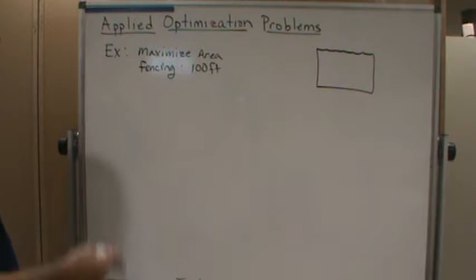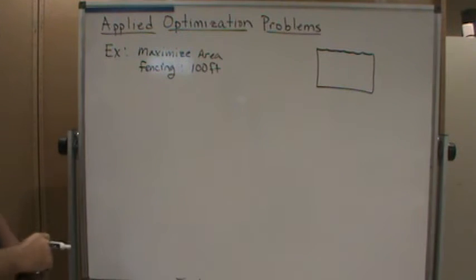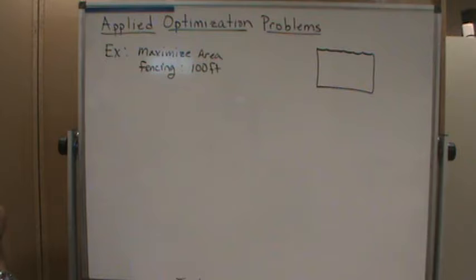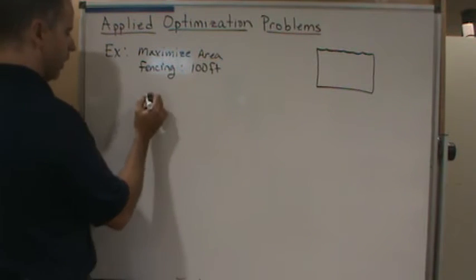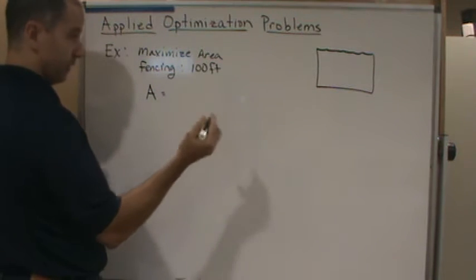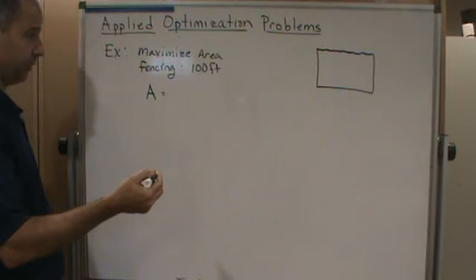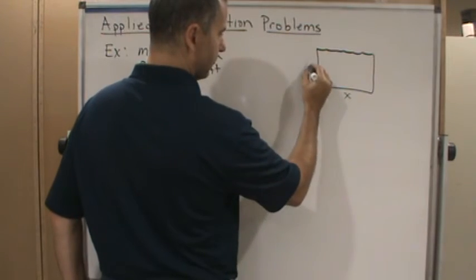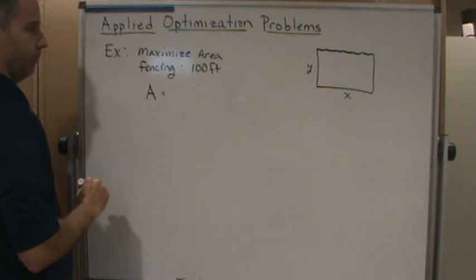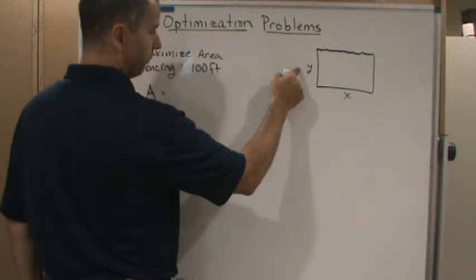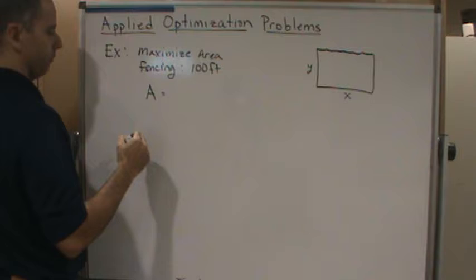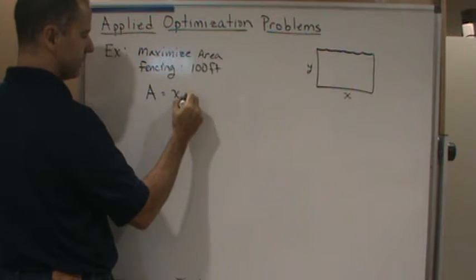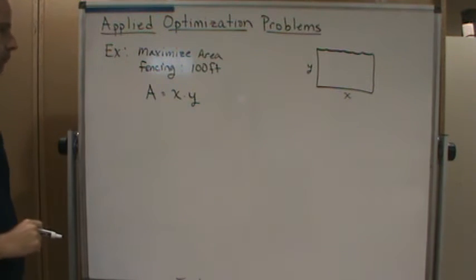We need to come up with a formula that involves area. The area of a rectangle is width times length. Let's call the dimensions x and y — you could use length and width if you prefer. So area is equal to x times y.